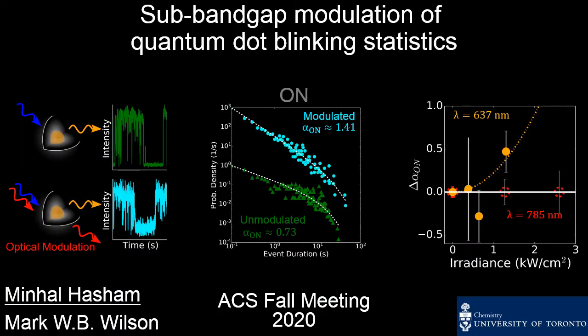Hello, everyone. My name is Minhal, and I'm a PhD student in Professor Mark Wilson's group in the Department of Chemistry at the University of Toronto. Today I wanted to talk to you about recent work where we've used subband gap modulation to alter the blinking statistics in quantum dots and modify the power law slopes.